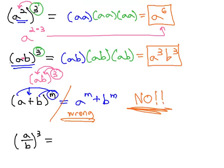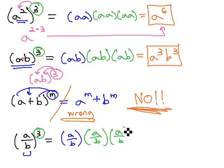That completes the power of a product rule. The power of a quotient rule is really similar, where we've got a over b and it's there three times. And you'll notice that means we've got a cubed in the numerator and three b's, or b cubed, in the denominator.